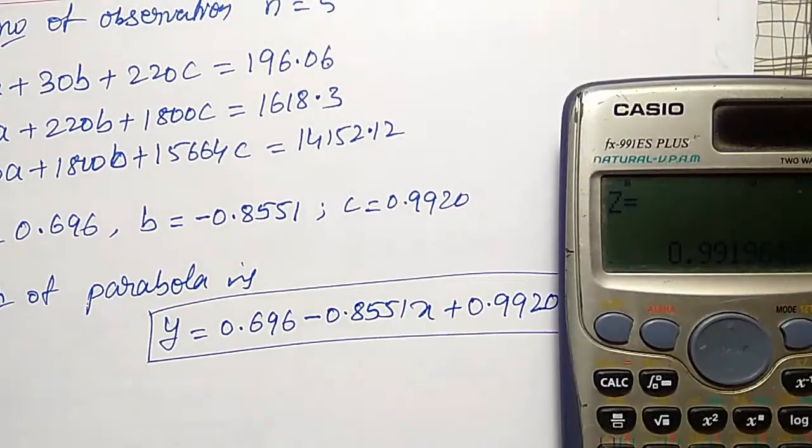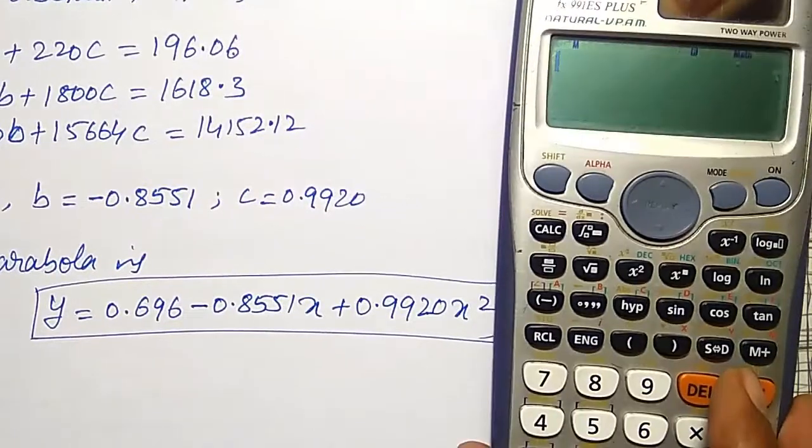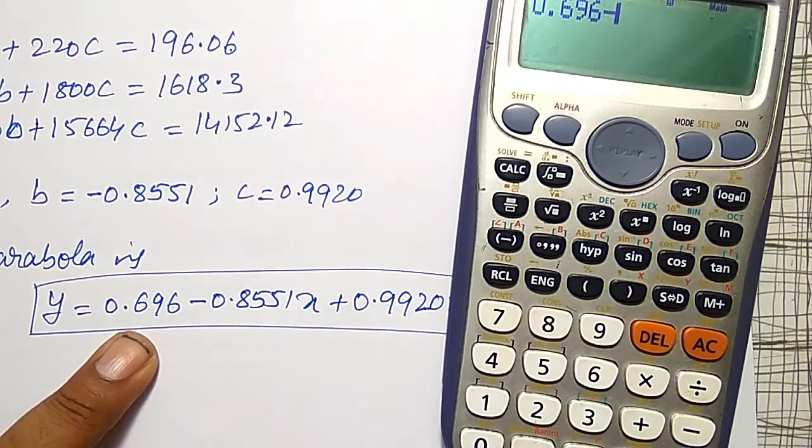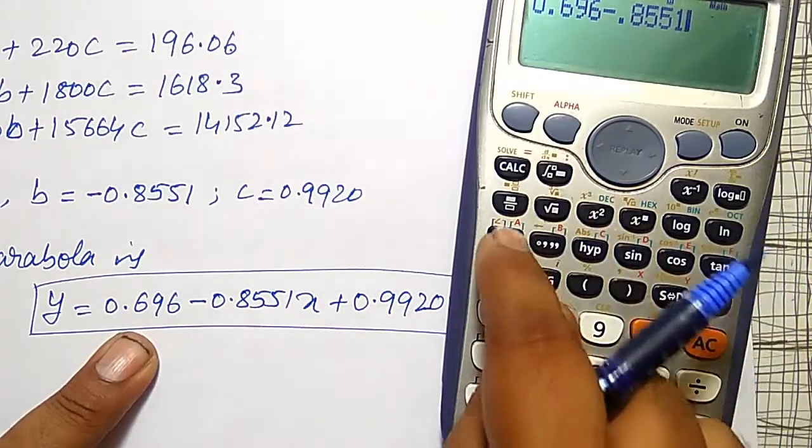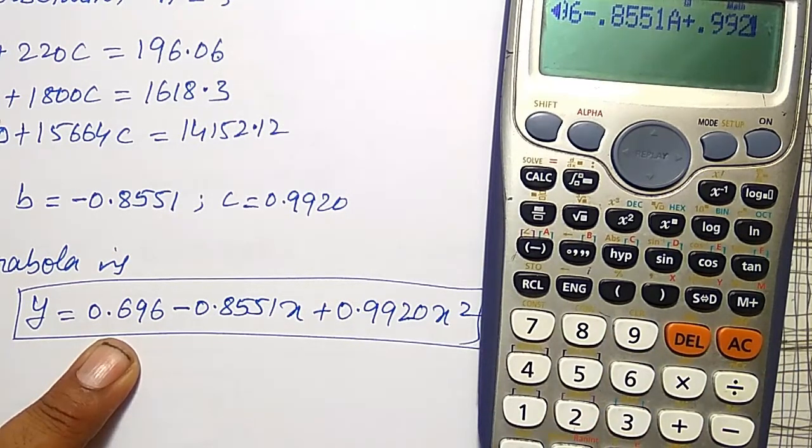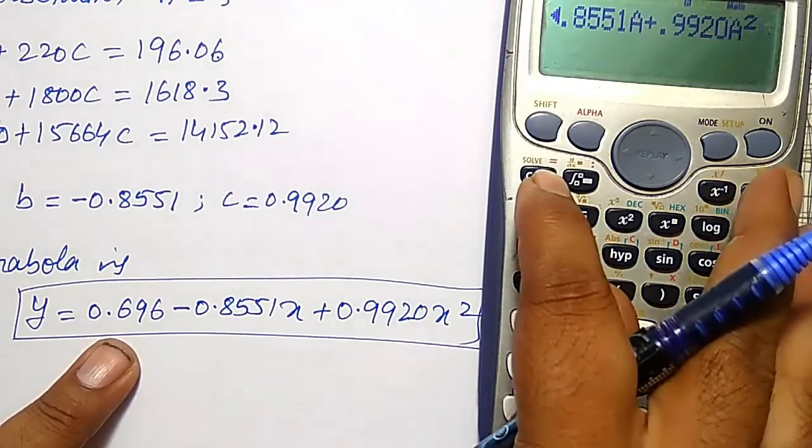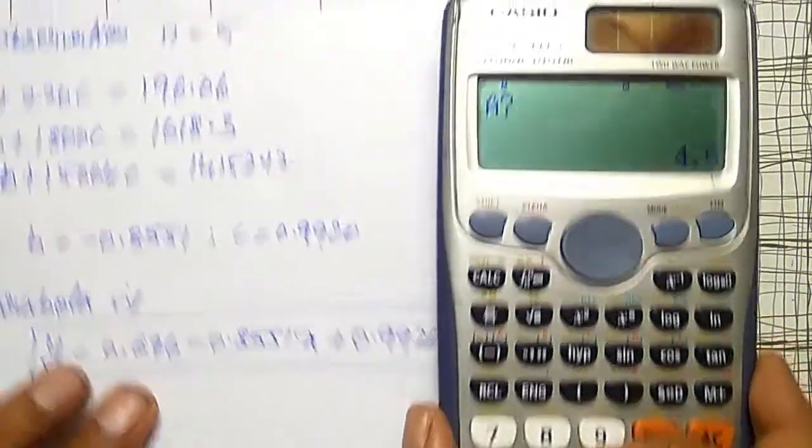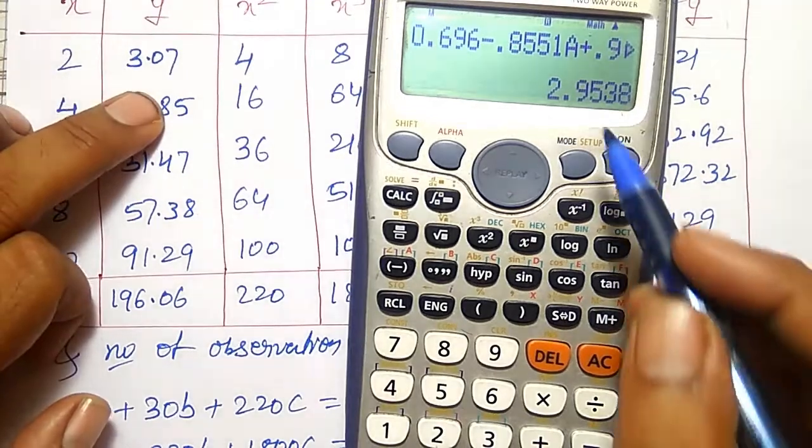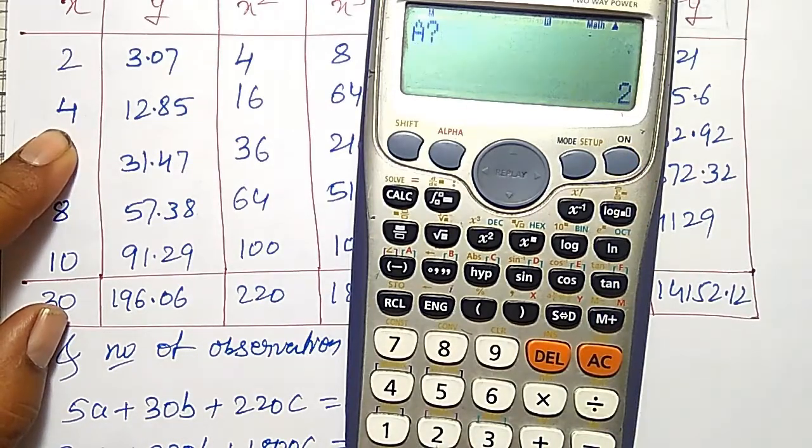To verify, I will go to first option in the mode and operate this equation as it is: 0.696 minus 0.8551 into alpha a plus 0.9920 into alpha a square. Then the calc option. My a value is x. For x equal to 2, I will get 2.95, approximately nearest to 3 only. Not exactly because there will be some error.